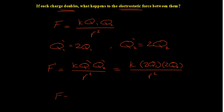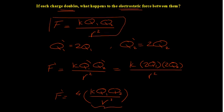Working that out: the new force equals 4·k·q1·q2 over r². This expression in the bracket represents the original force between the two charges before doubling them. So the new electrostatic force after doubling both charges will be four times the original force.